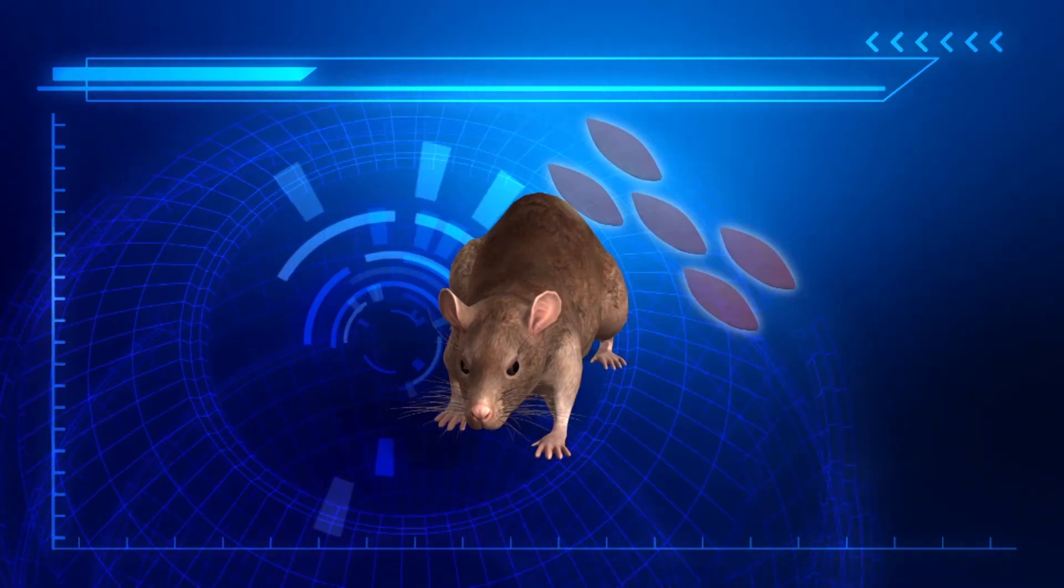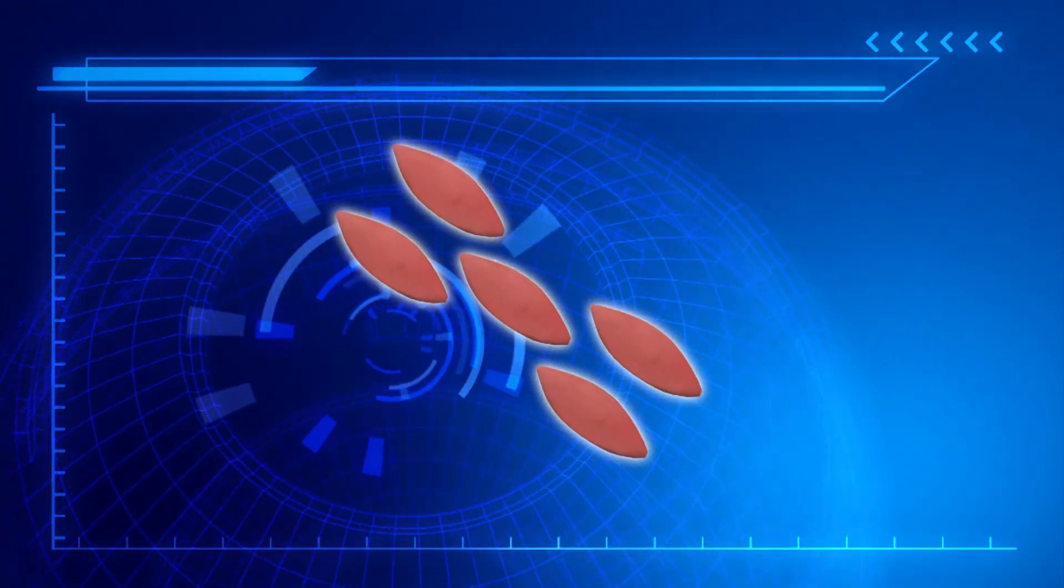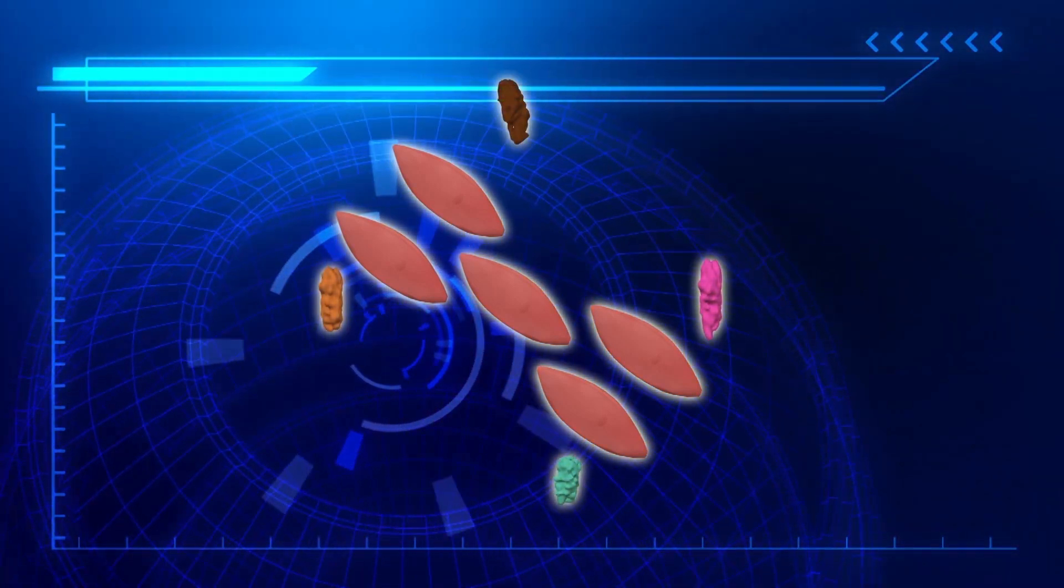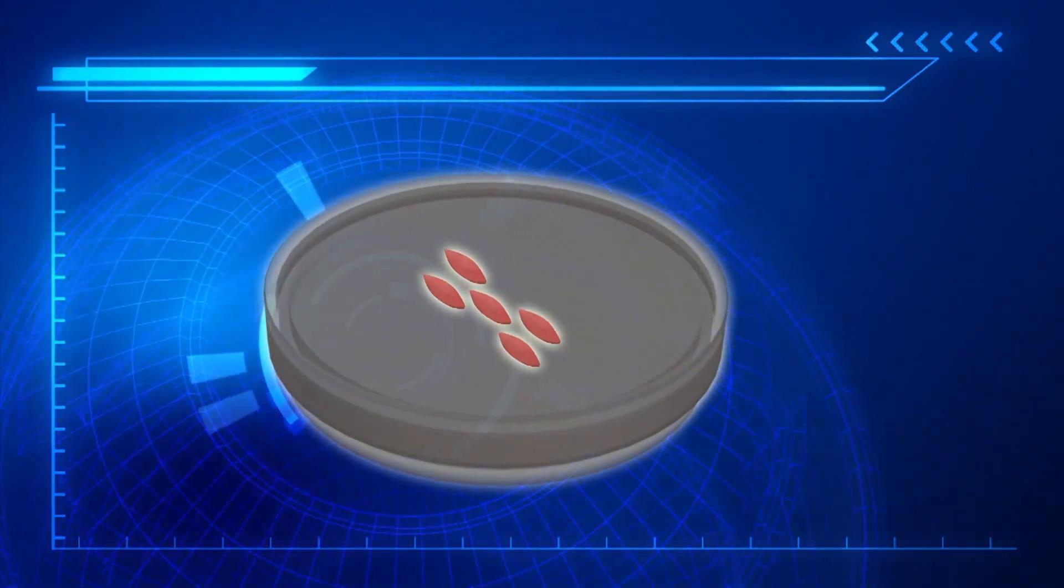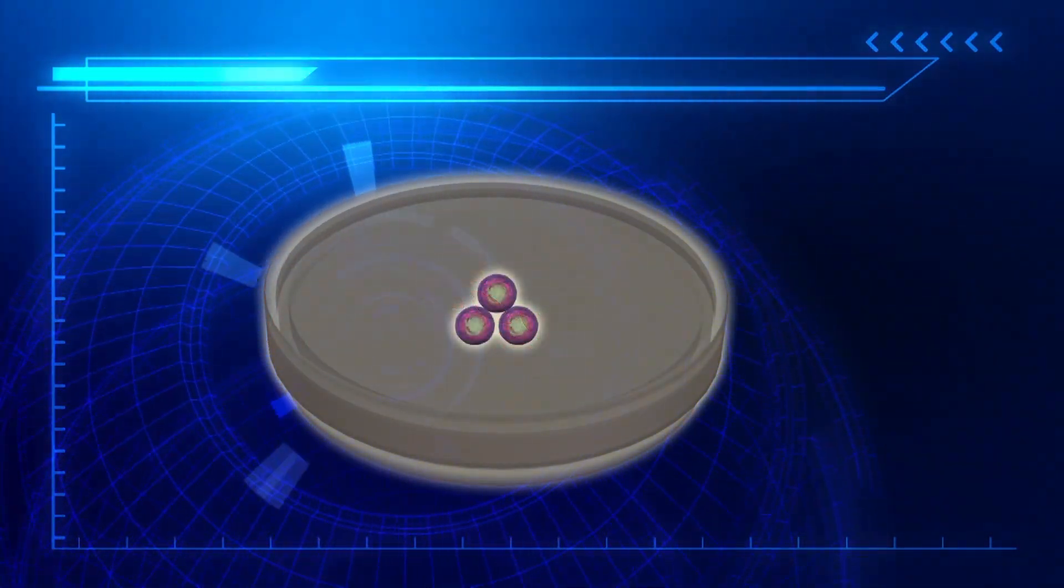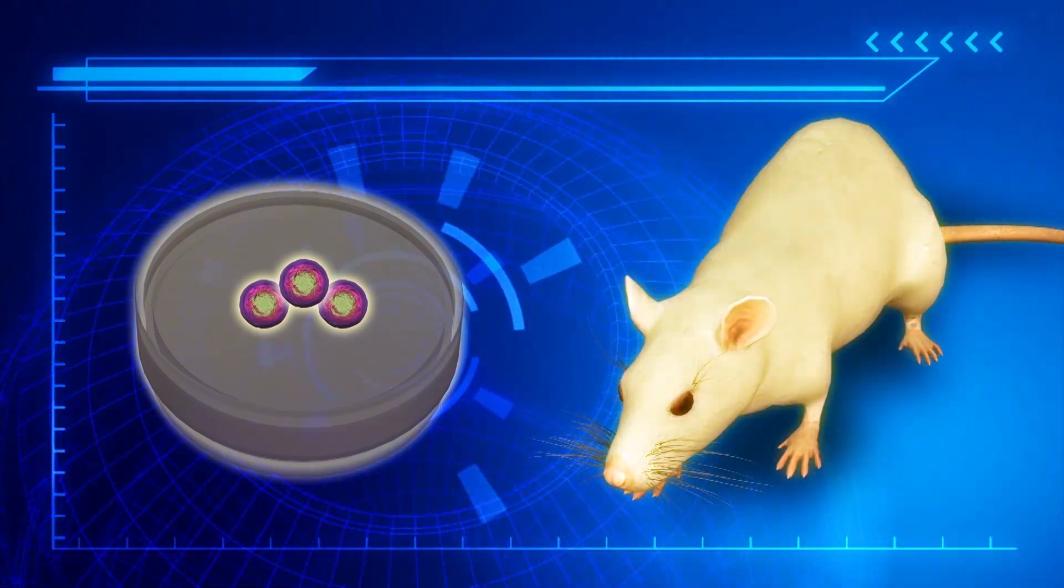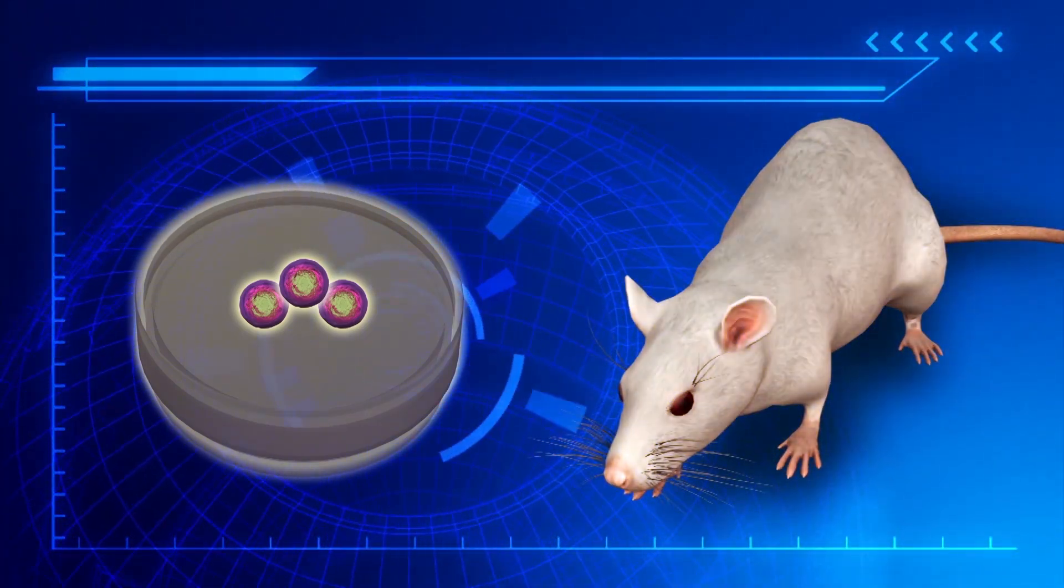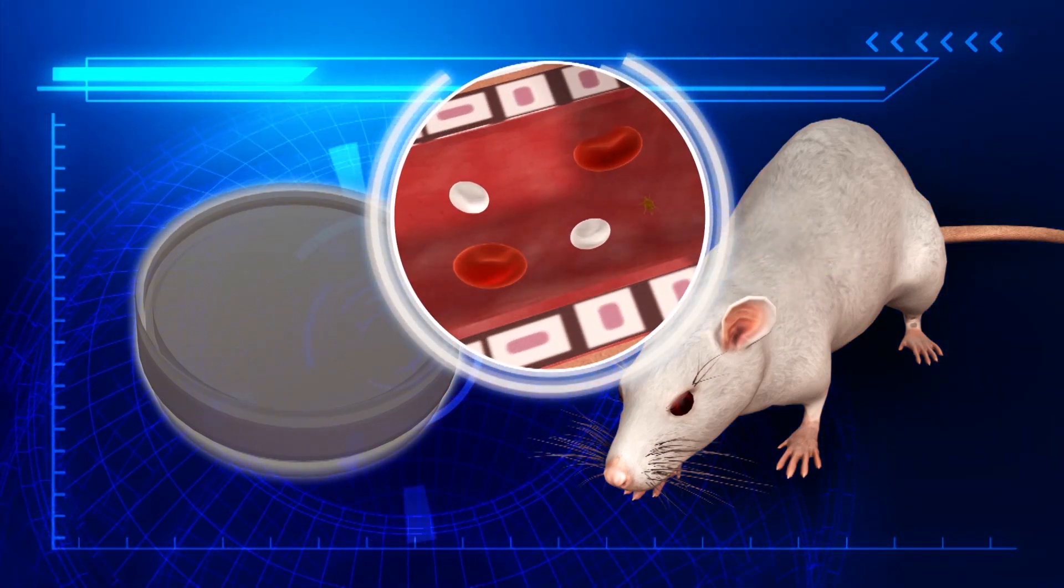A second research team used blood cells from mice and injected them with a mix of transcription factors. The cells morphed into stem cells after incubating in petri dishes designed to mimic a human blood vessel environment. When injected into weak mice that had been treated with radiation, the stem cells regenerated both blood and immune cells. The mice recovered and went on to live full lifespans.